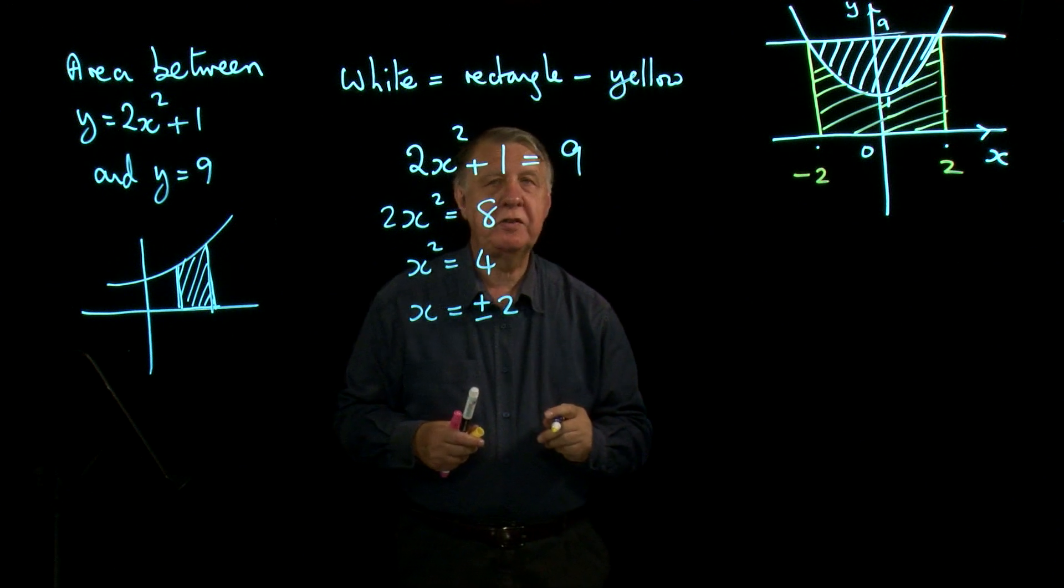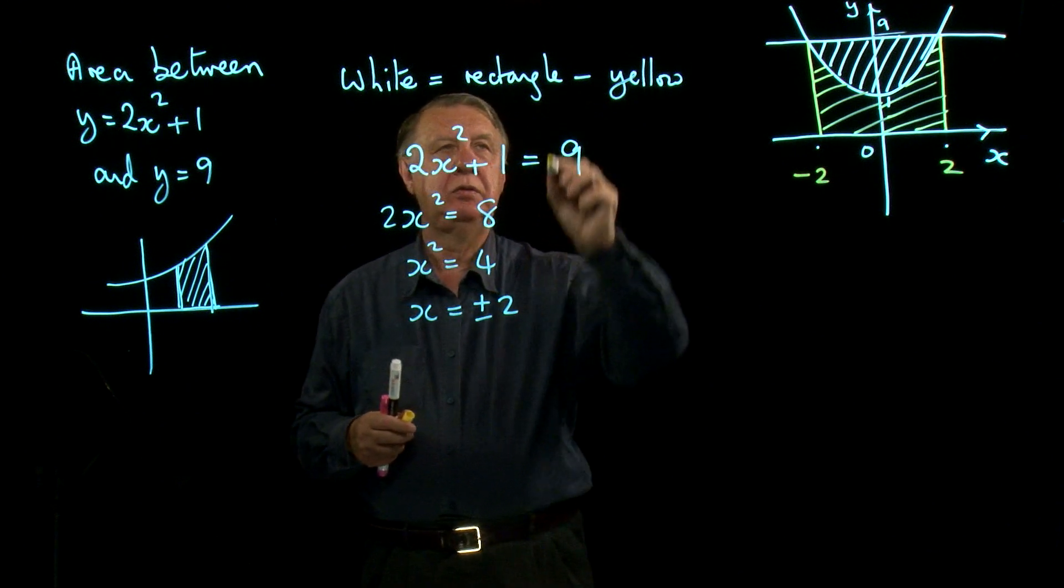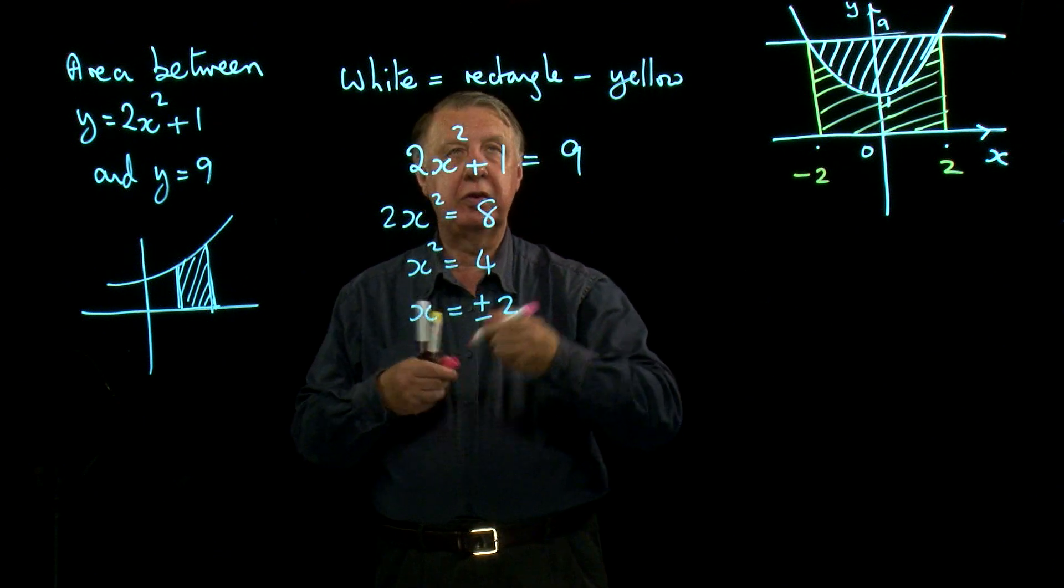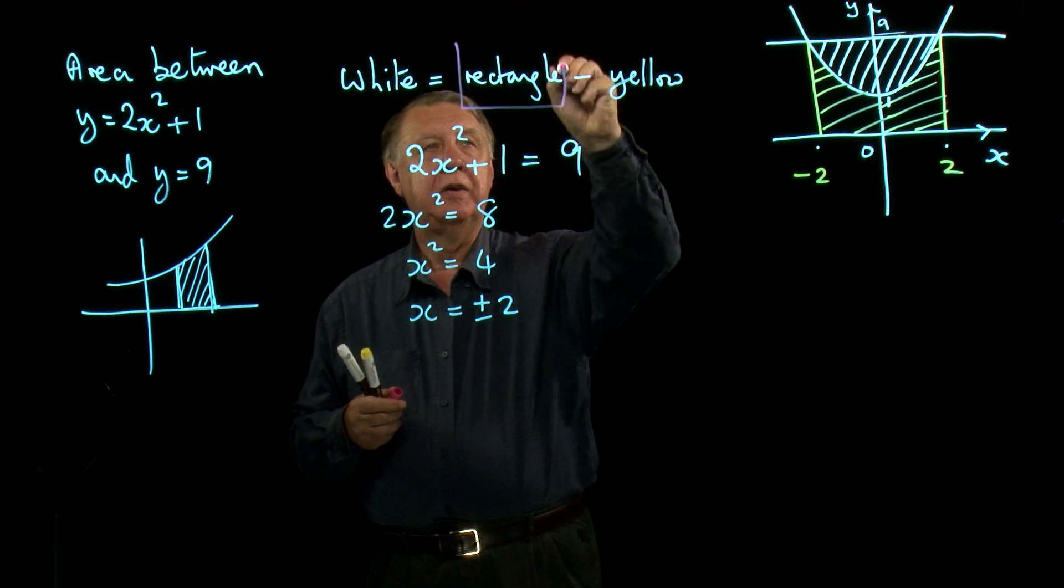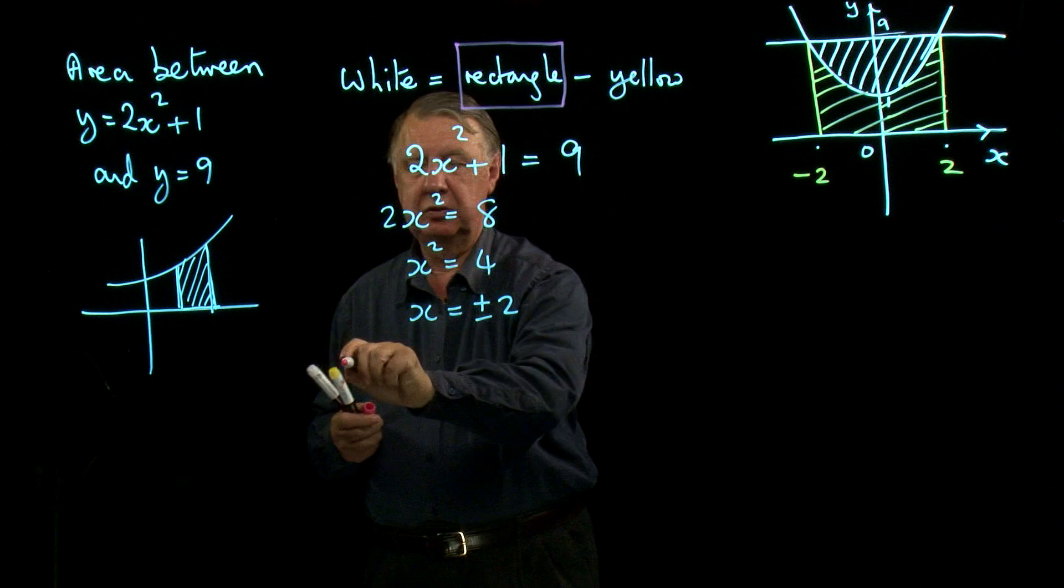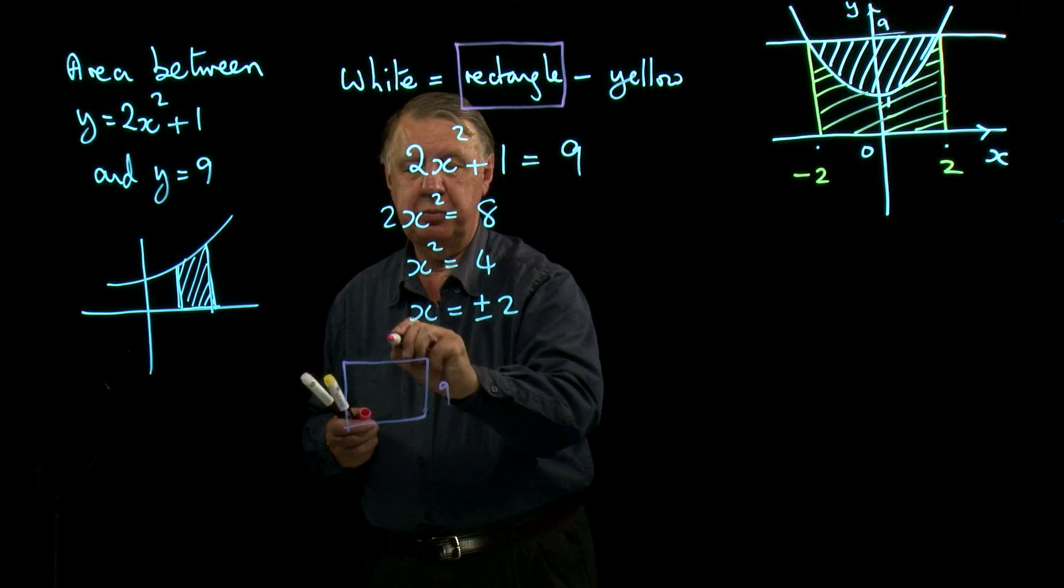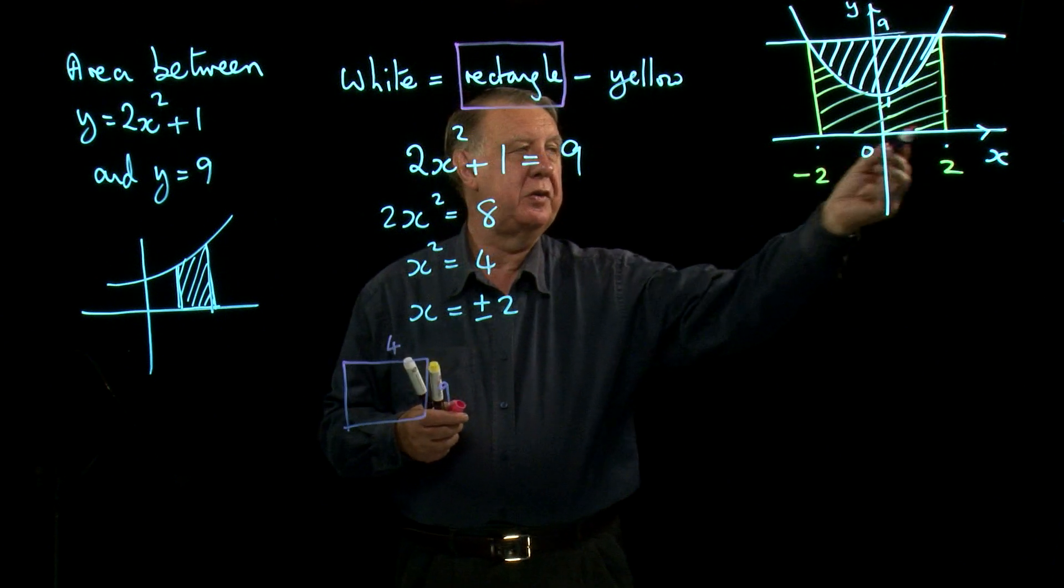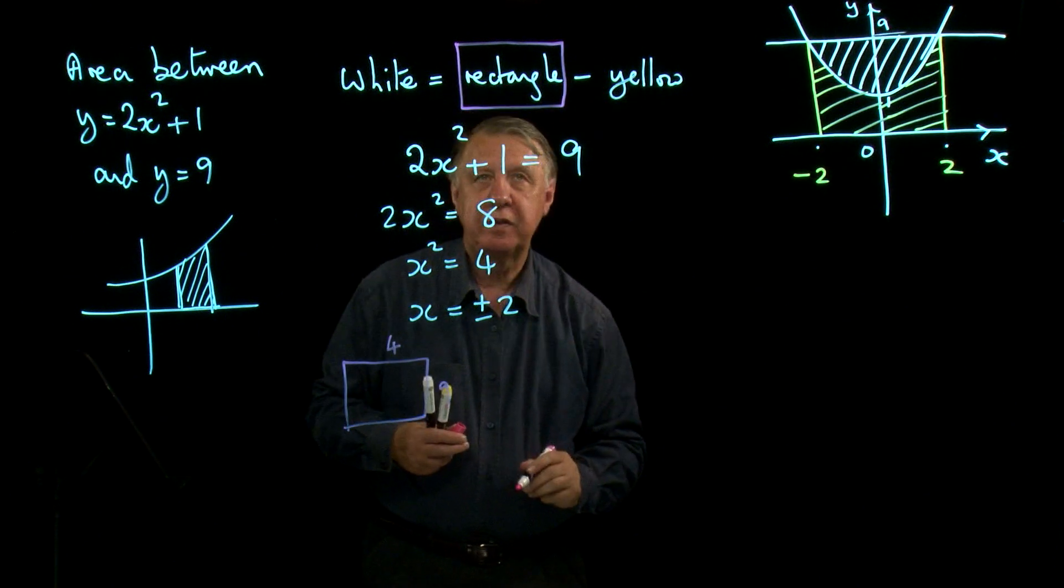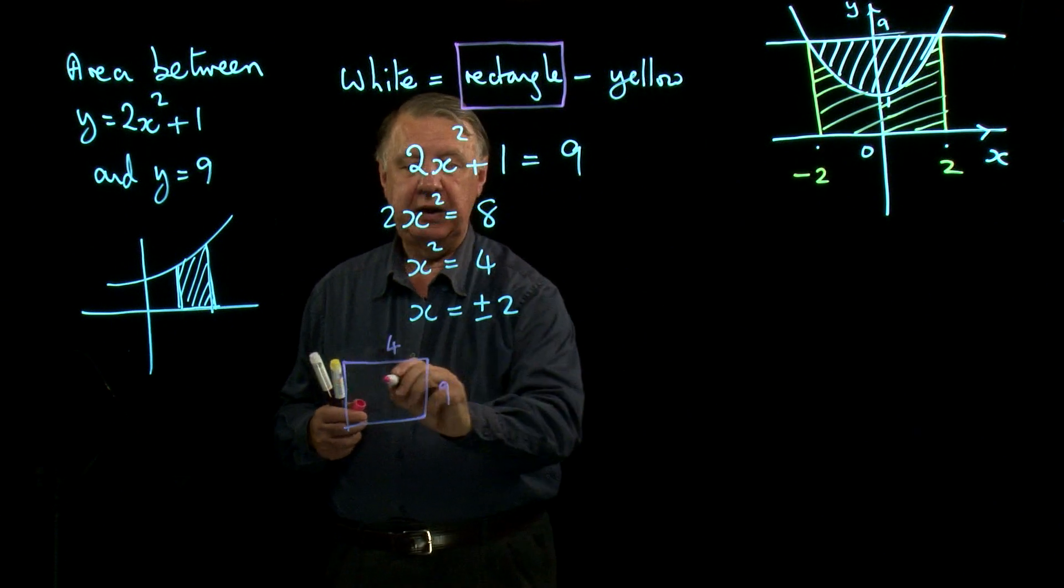Which means that our rectangle, let's identify what we're doing here. So the rectangle is 9 by 4, because minus 2 to plus 2 is 4. So the area of the rectangle is 36.